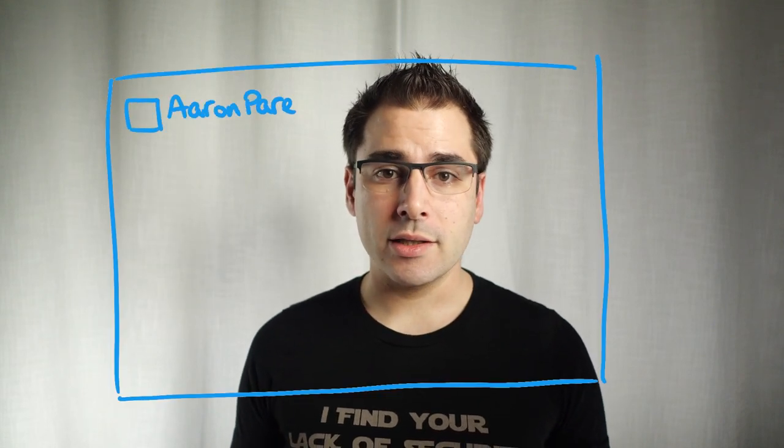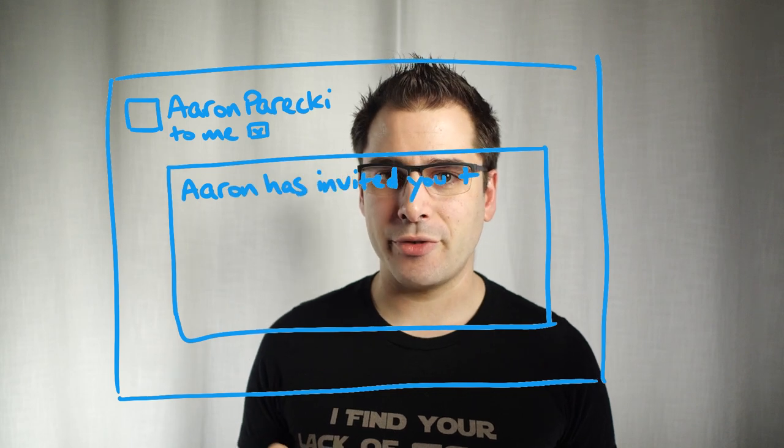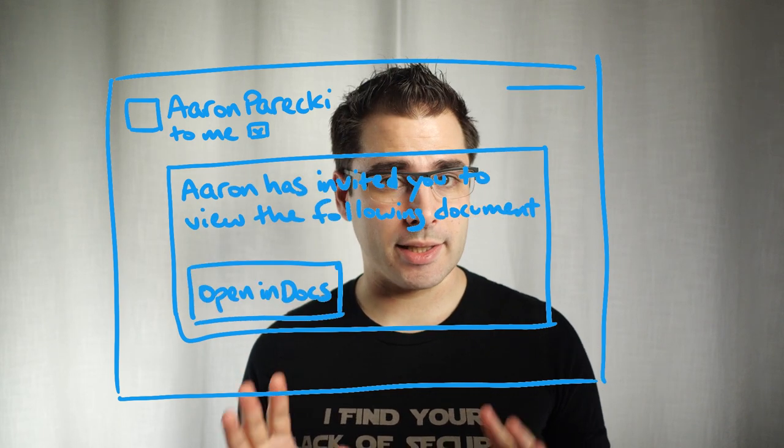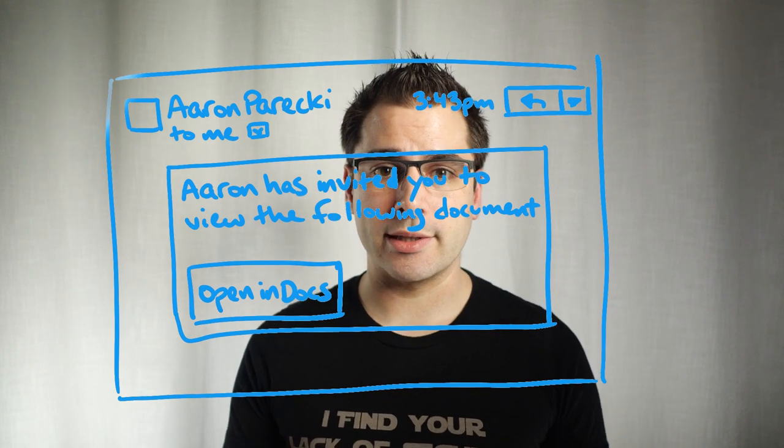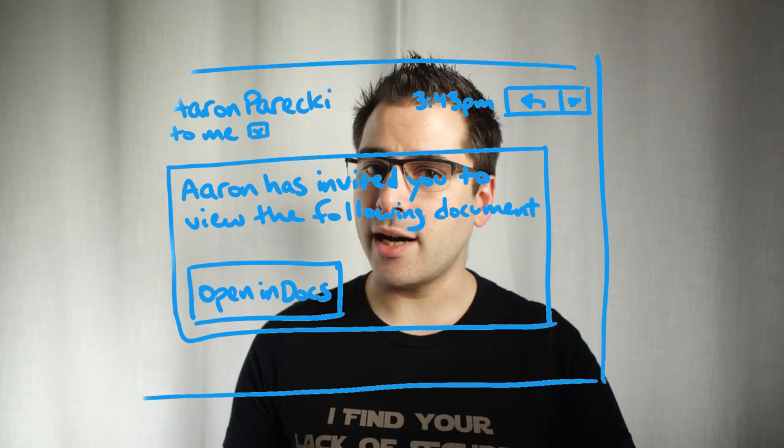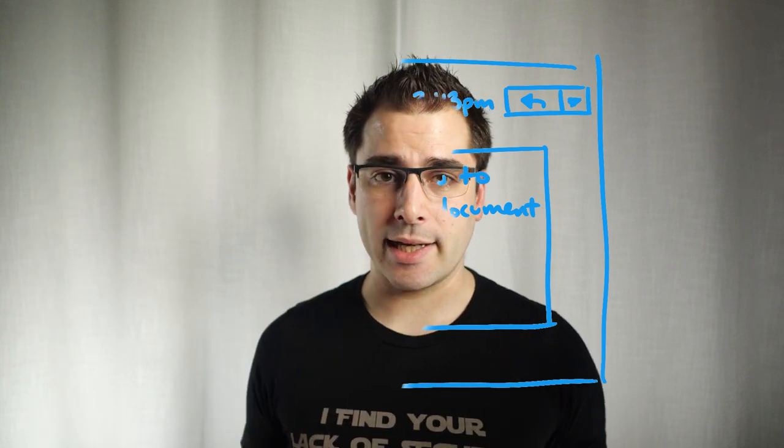Once the attacker has an access token, they can use the real Google API to download that person's contacts, then use the Gmail API to send an email from that person to all of their friends. And it's a real email — not spam — because it's sent using a real access token from a real Gmail account via the API.